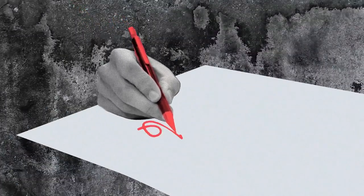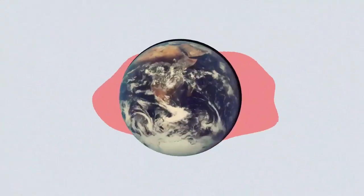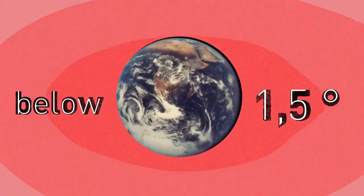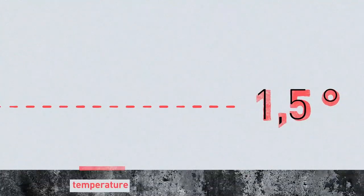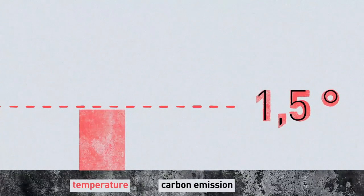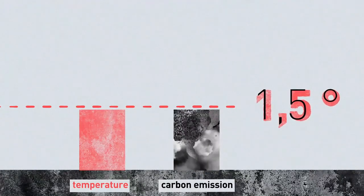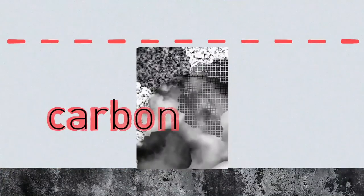The countries that signed the Paris Agreement pledged to keep global warming below 1.5 degrees Celsius. In order to comply with that objective, there is a maximum amount of CO2 we can emit. This is our carbon budget.